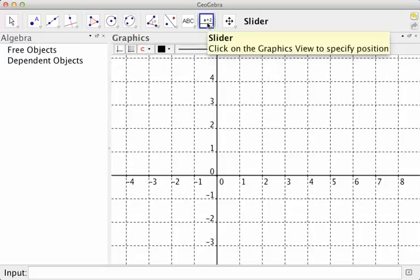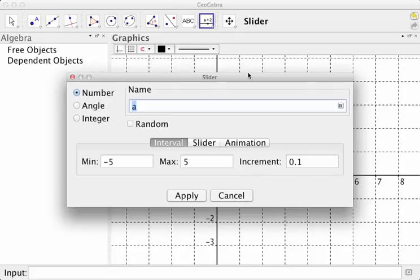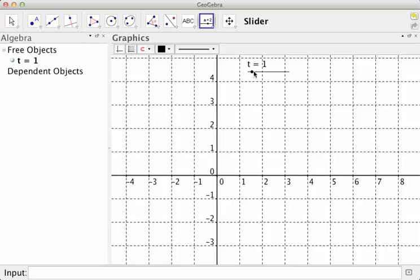First thing we're going to do is make a slider, so that's this right here. Click on it and click anywhere. I'm going to call it T. Then you can set your minimum, which I'll make 0, and your maximum, which I'll make 10, and the increment. We can change all that later if we want to. So apply, it shows up there.